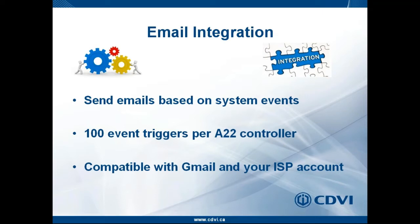Email integration: any event that the system can generate can be used as a trigger to send an email. Very often we will use alarm situations — door forced open, door left open, card access events, access denied events — and we will be able to send an email to three individual email addresses. The Atrium controller will be able to fire off an email on these types of events.